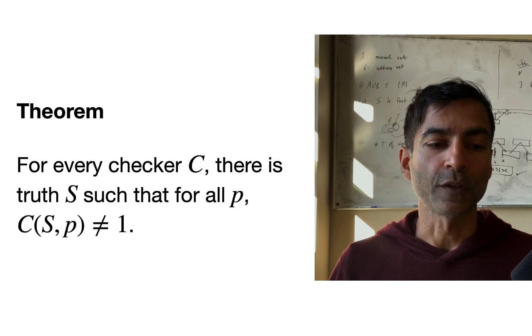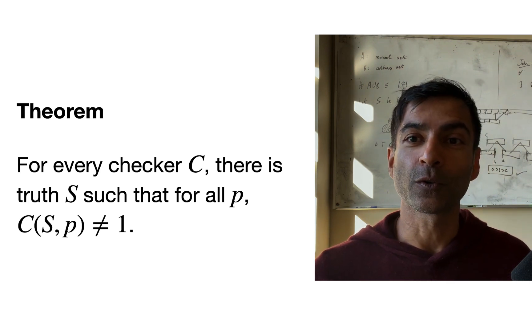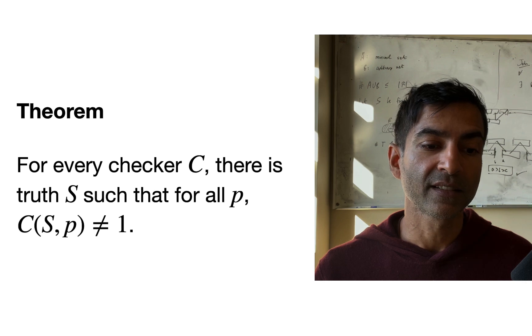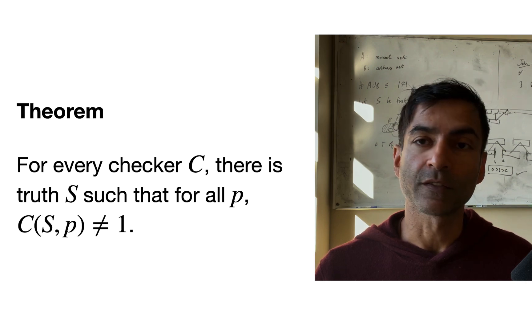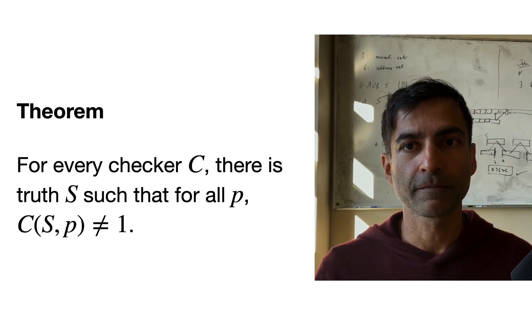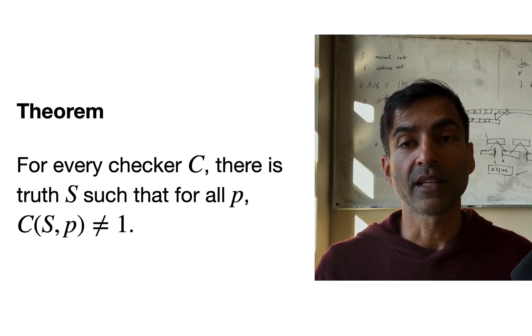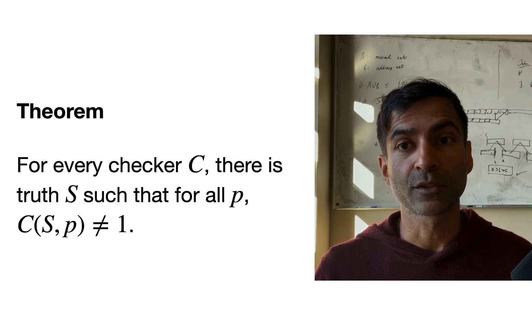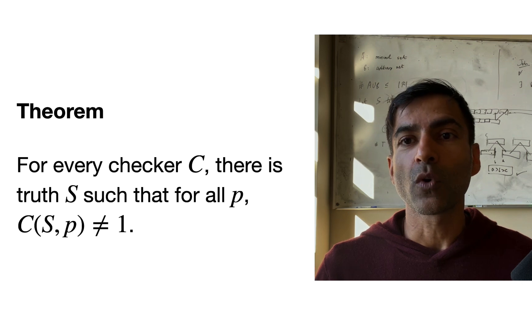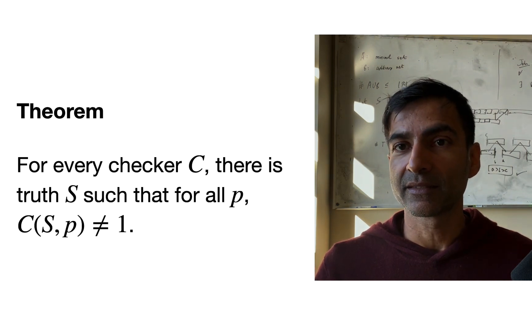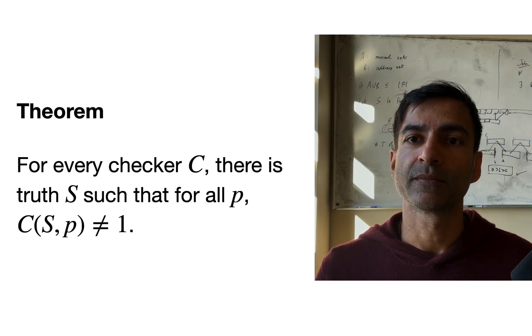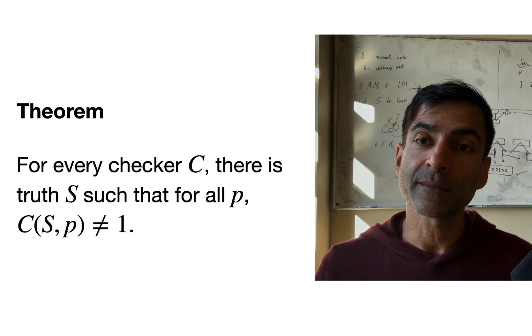Okay, so if you think about the C as the code of one of our brains, say my brain, then this theorem says that if you write down a program that simulates exactly what my brain is going to do, then there is going to be a true statement S such that no matter what argument is presented to me, I will never be convinced that this statement is true, even though this statement is true.